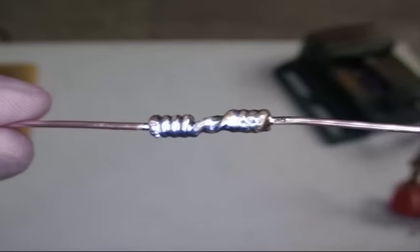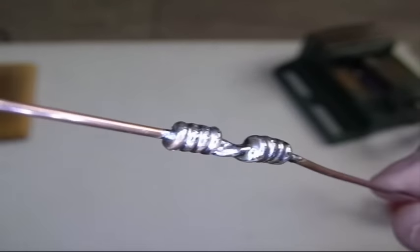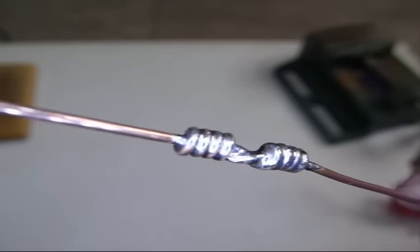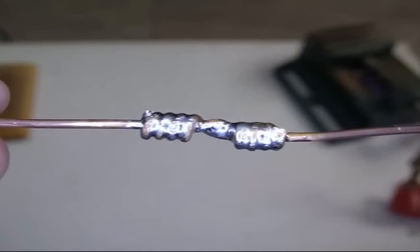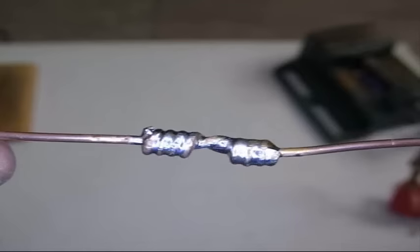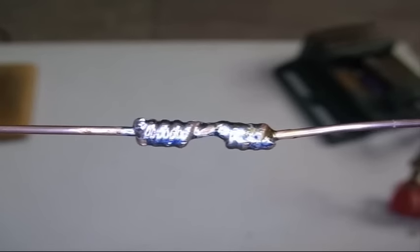So here's our joint, and we're soldered through the ends. Yes, we've got good penetration of solder throughout the joint. And that will be tremendously strong. It will easily support the pull of the wire and be about as strong as the wire itself.